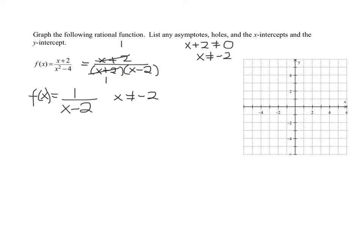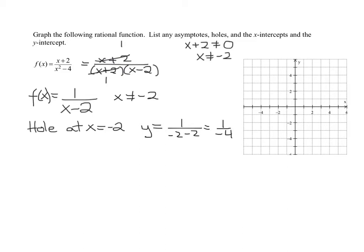What does this reducing of the x plus 2 actually mean? It means when x plus 2 equals 0, or x equals negative 2, we are going to have a hole in the graph. To find the y-value of the hole, we plug negative 2 into the reduced form: 1 over negative 2 minus 2, which gives 1 over negative 4. So the hole has coordinates negative 2, negative one-fourth.